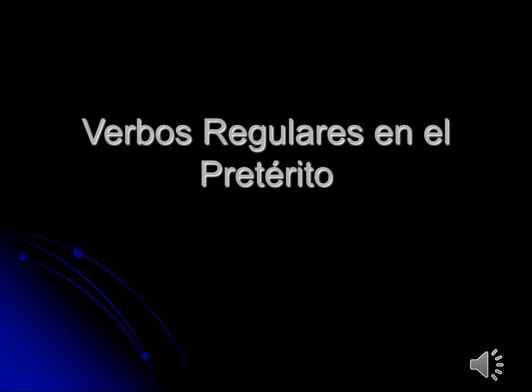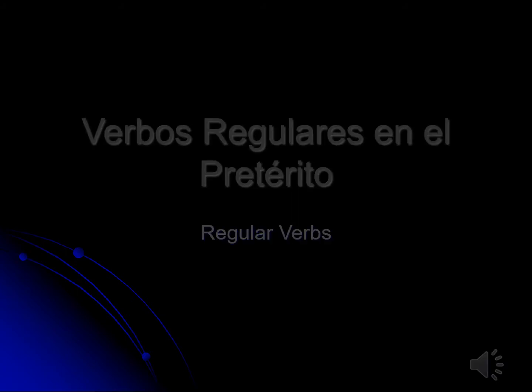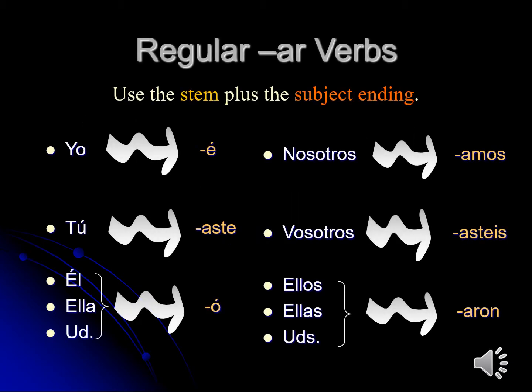Verbos regulares en el pretérito. Let's start with regular verbs in the preterite. Conjugating verbs in the preterite tense works exactly the same way as conjugating verbs in the present tense. You take the AR, ER, or IR ending off and you add the appropriate subject ending. The difference is that the preterite endings are different from the present tense endings. The AR endings in the preterite are: É for yo, Aste for tú, Ó for él, ella, or usted, Amos for nosotros, Asteis for vosotros, and Aron for ellos, ellas, or ustedes. It is important to notice that the Amos ending for nosotros is exactly the same as the present tense ending for nosotros. You just have to tell from the context whether it's present or past.